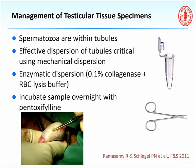Testicular tissue is processed with mechanical dispersion using a 23-gauge angiocath and iris scissors. In cases where sperm are not identified intraoperatively, tissue is left overnight with collagenase and a lysis buffer, and the sample is incubated overnight with pentoxifylline to identify any sperm in the morning. Sperm retrieval is typically done the day before egg retrieval; the majority of the time sperm are identified with effective mechanical dispersion alone.